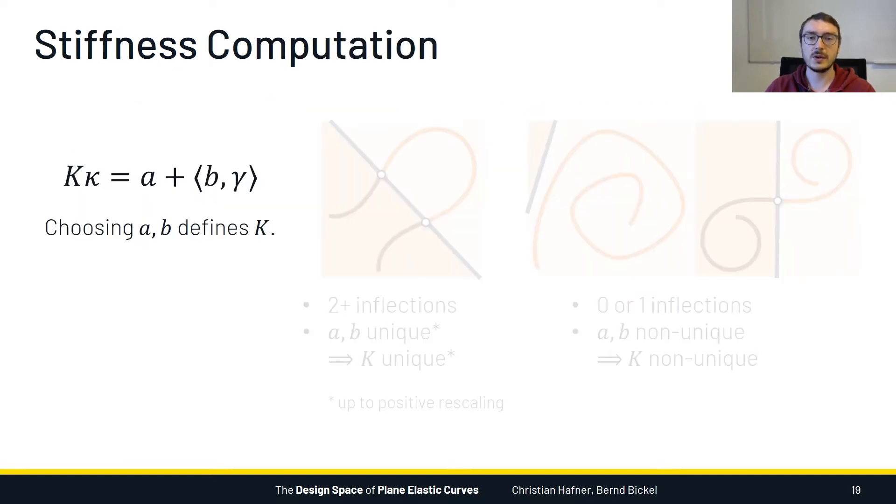To figure this out, let's look at the moment equilibrium equation again. What we can see is that as soon as we have chosen values for A and B, this already defines the stiffness function K uniquely. For curves that have at least two inflections, this makes the situation very simple. The constants A and B define a line which, according to our theorem, needs to intersect all inflection points. But there is only one such line. This tells us that the choice for A and B is unique, at least up to positive rescaling, so K is unique as well. This means that there is only a single stiffness profile that realizes this curve.